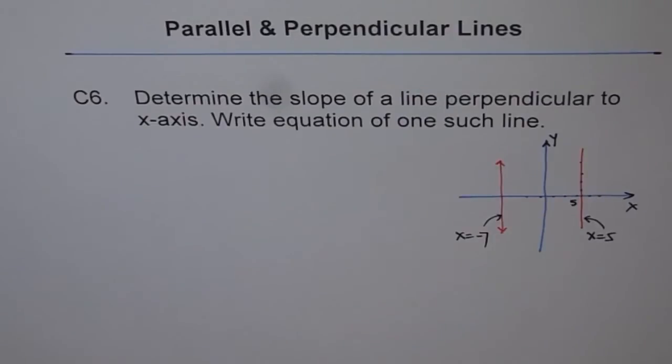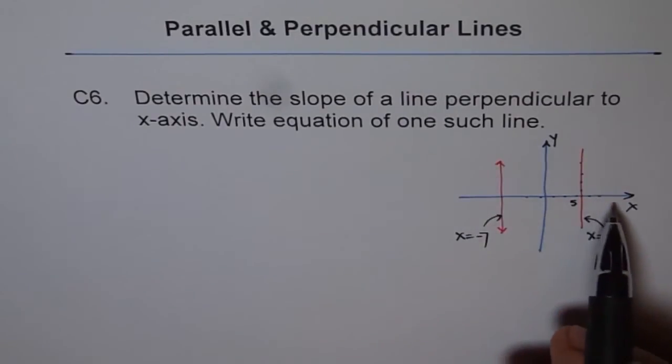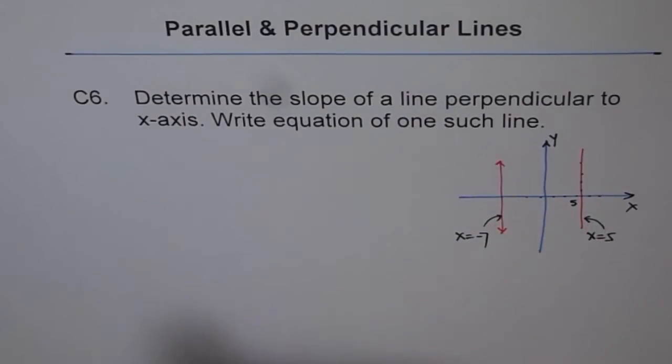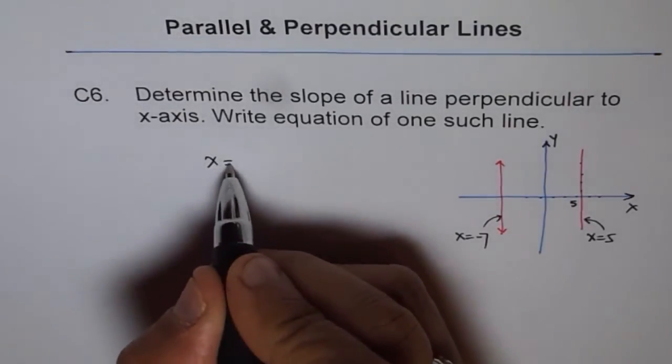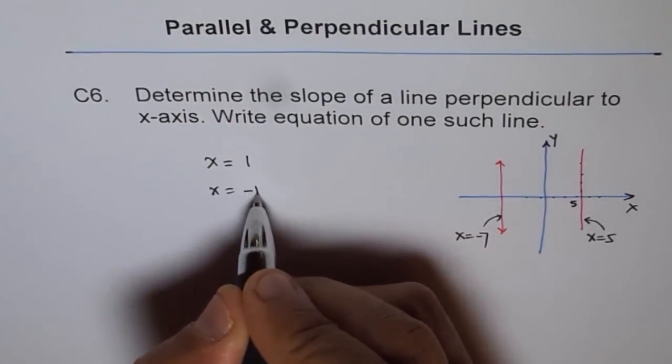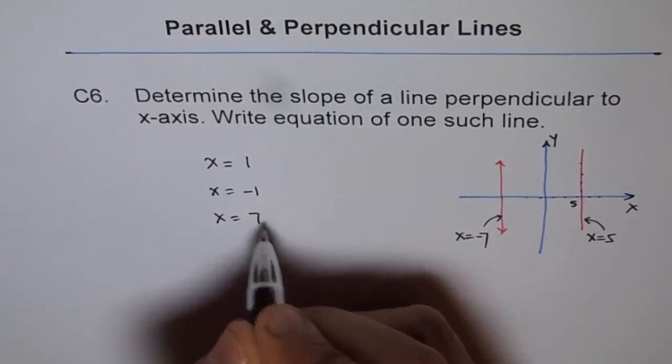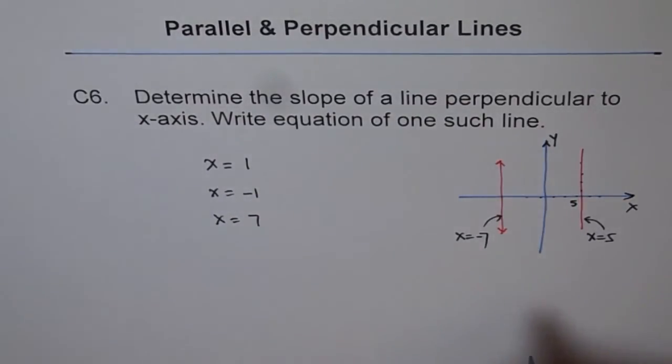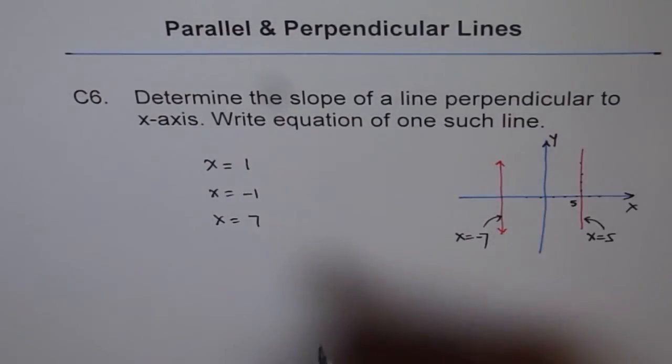So we can have many lines which could be perpendicular to x-axis. And their equation will be like x equals to something. So it could be x equals to 1, x equals to minus 1, x equals to 7, like this. Right? So these are many possibilities, x equals to any value.